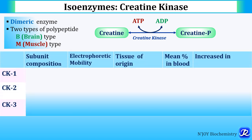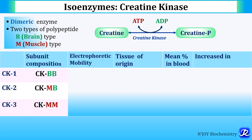CK1 is composed of two BB subunits (both brain type) — it is CKBB. CK2 has one B-type and one M-type subunit — CKMB. CK3 has both M-type subunits — CKMM. Electrophoretic mobility is fastest for CK1 and slowest for CK3.